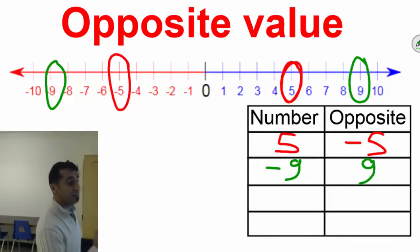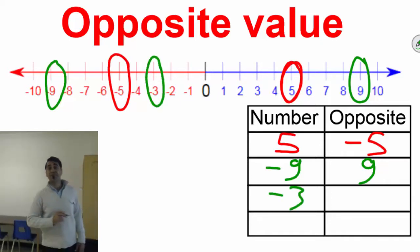That's going to be positive 9. Let me do one more. What is the opposite of negative 3? Opposite of negative 3 will be positive 3. So, I believe now you are seeing the pattern here.